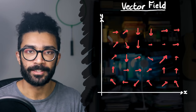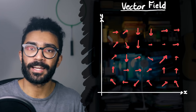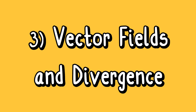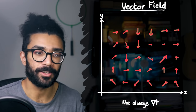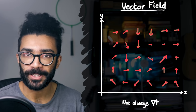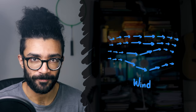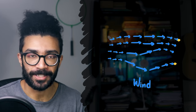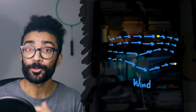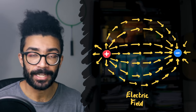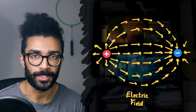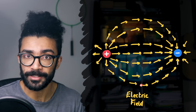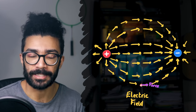A vector field is just a field where we can assign a vector to every point in that space, and the gradient of a scalar field ends up being a vector field. However, a vector field is not always restricted to just being the gradient of a scalar field. For example, we can think of a vector field that represents the direction in which wind is flowing — the direction of each vector tells us the direction in which air particles are moving, and the magnitude tells us the speed. In physics, we can also use a vector field to represent the electric field created by charged particles, where the field lines tell us the size and direction of the force a small positive charge would experience.